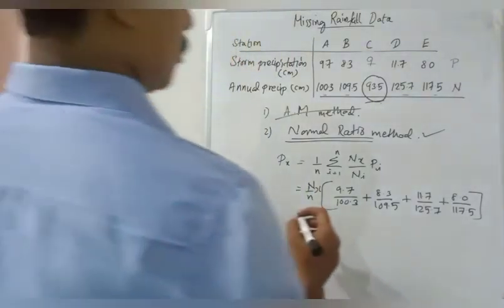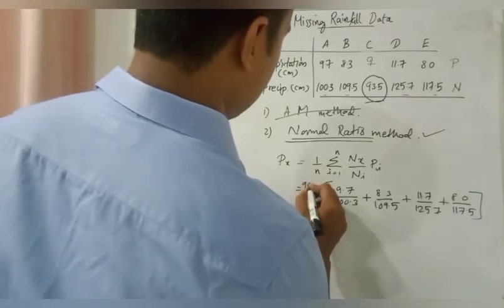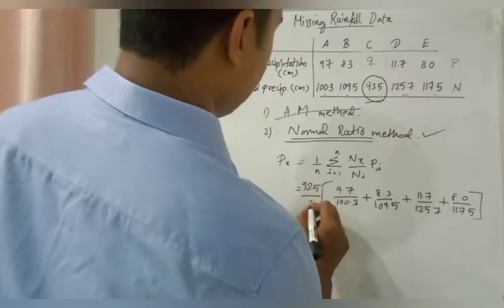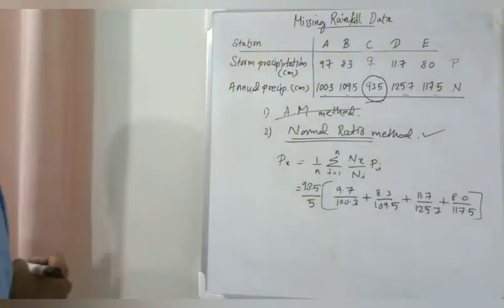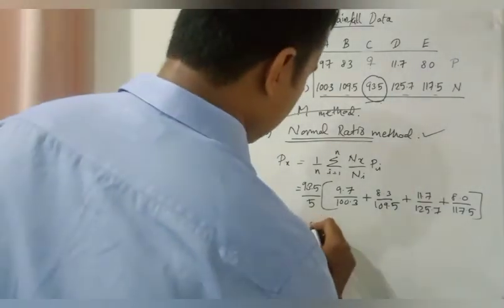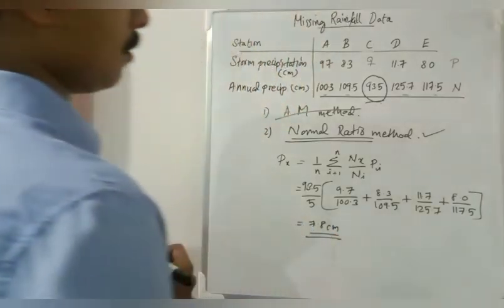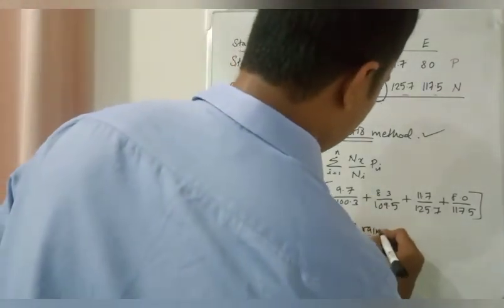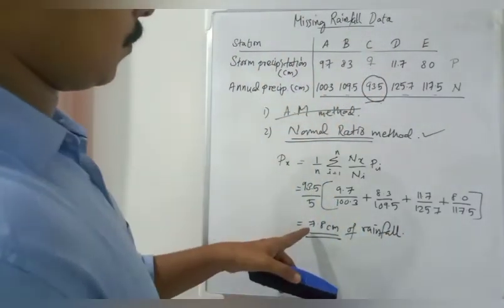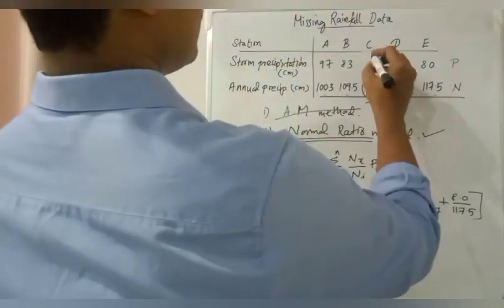So Nx is 93.5 divided by n is 5. You get the answer as 7.8 centimeters of rainfall or precipitation. So 7.8 is the answer for Pc.